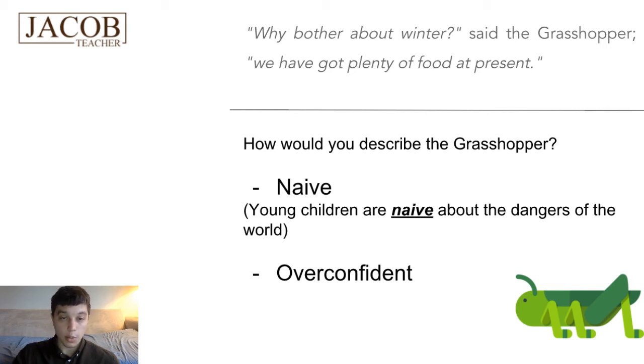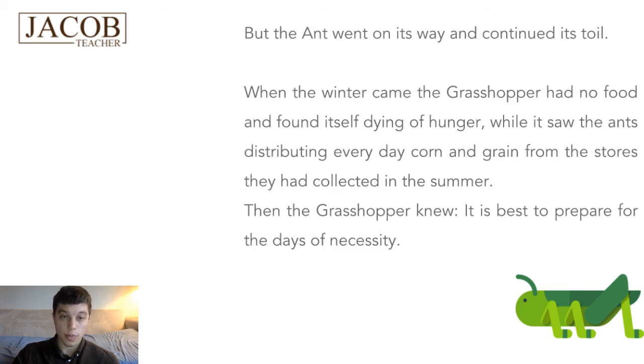And so what happens to the poor grasshopper? The ant goes on its way, continues its hard work. When the winter came, the grasshopper had no food and found itself dying of hunger while it saw the ants distributing everyday corn and grain from the stores they had collected in the summer. Then the grasshopper knew it is best to prepare for the days of necessity. So the grasshopper learns a horrible lesson once it's already too late, once he's dying of hunger.